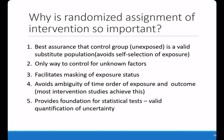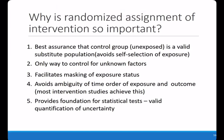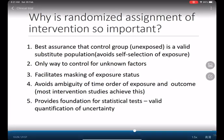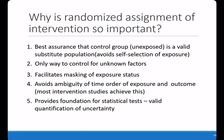Through randomization, we can best show that the control group, as the unexposed group, is a valid substitute for the population, avoiding selection bias. Randomization is the only way to control for unknown factors that could bias the exposed and unexposed groups. It also facilitates masking of the exposure and avoids ambiguity in the time order of exposure and outcome — meaning the outcome is observed after the intervention, not before. Finally, it provides the statistical foundation for valid quantification of uncertainty.